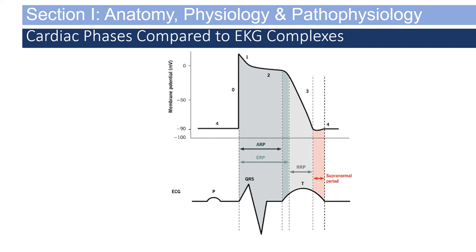If you have trouble grasping this concept, consider a punching bag analogy. When you bring your arm back, that is similar to repolarization. Depolarization is when you punch the bag. At the point you actually strike the bag, that is your absolute refractory period — your hand makes contact and no other impulse could cause anything greater than that, unless of course you are Chuck Norris.